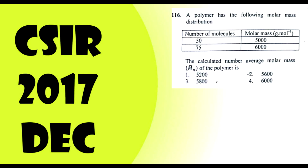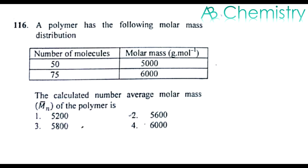This question is from 2017 December Part C. It is based on polymer chemistry. A polymer has the following molar mass distribution. The table is given with the number of molecules and molar mass.